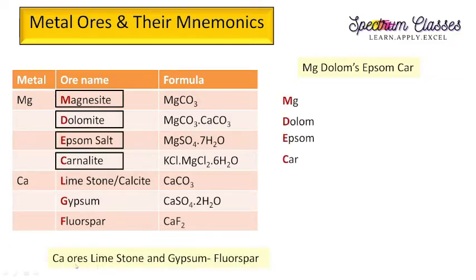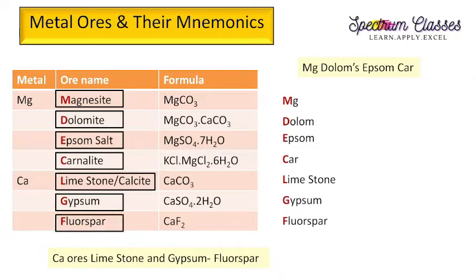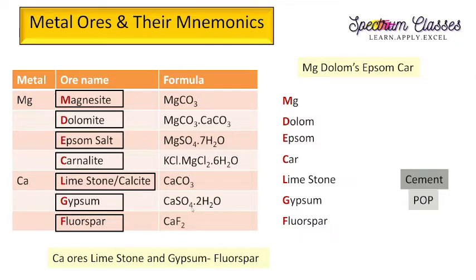For calcium I use this sentence: calcium ores — limestone and gypsum, fluorspar. Limestone is also known as calcite (CaCO3) and is heavily used in the cement industry. Gypsum is calcium sulfate dihydrate (CaSO4·2H2O); if it is half-hydrated, it is termed POP — plaster of paris. So gypsum is used to make plaster of paris.